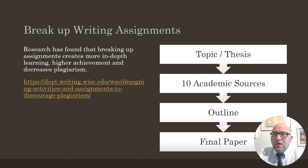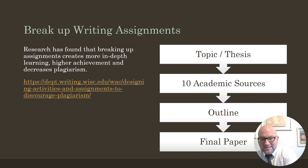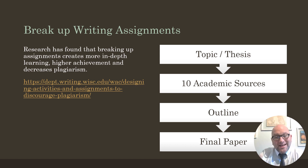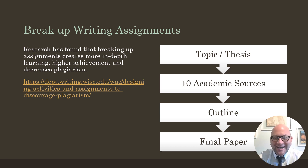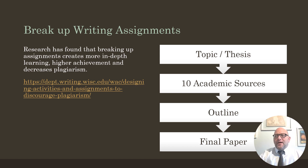Another thing you can do is break up the writing assignment. Rather than 'by the end of the semester, turn in a 10-page paper,' make it: this day you give me a topic and thesis, this day academic sources, this day a bullet-pointed outline, then a first draft, second draft, final draft. AI does very well writing a complete thing, but breaking it up makes it more difficult — it's not foolproof, but any step you can add to slow down AI misuse will encourage students to be a little more honest.